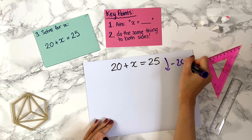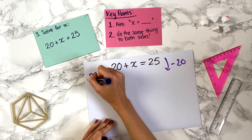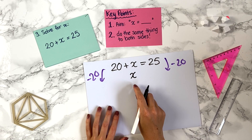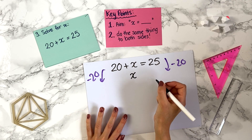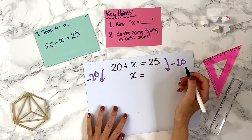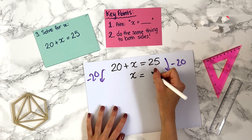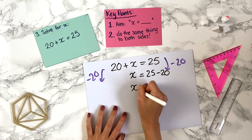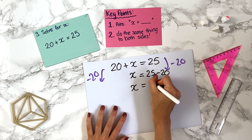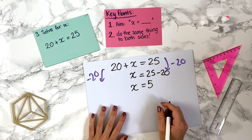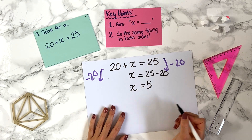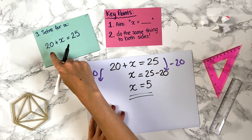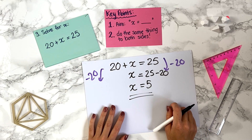If we minus 20, we do it on both sides. On the left, 20 minus 20 is zero, so we ignore that term. On the right, we get 25 minus 20. We can simplify: x equals 5. And you can check straight away — 20 plus 5 is 25, so we know we're correct.